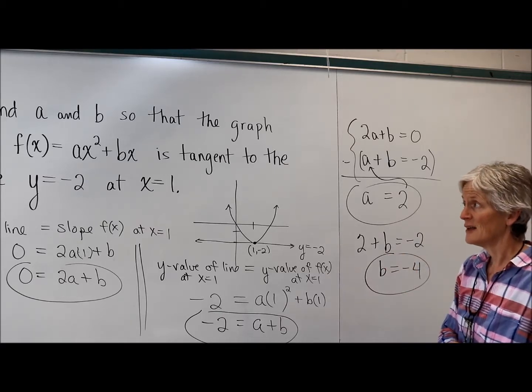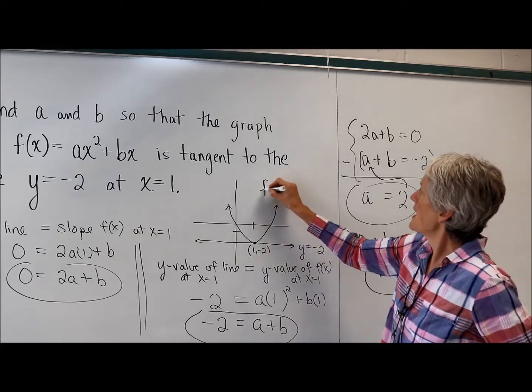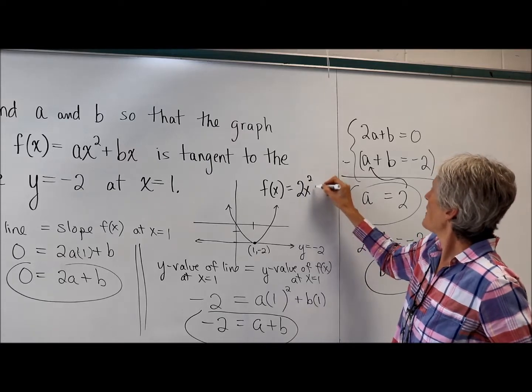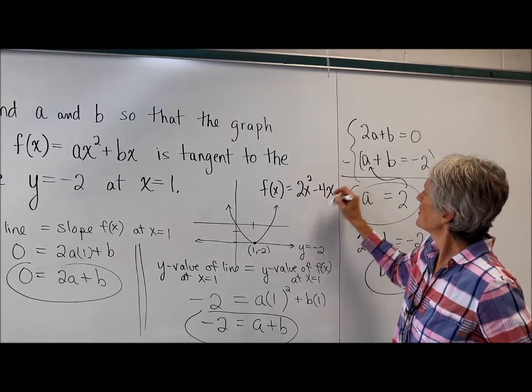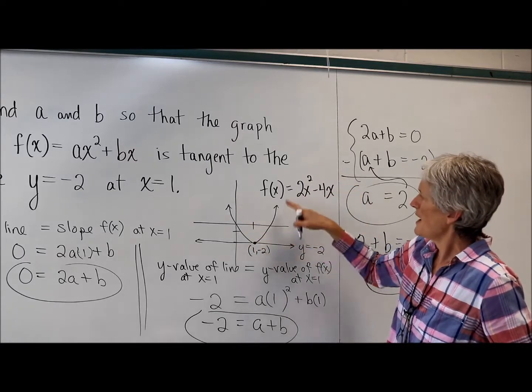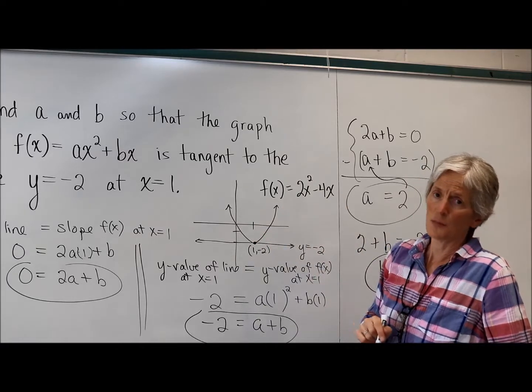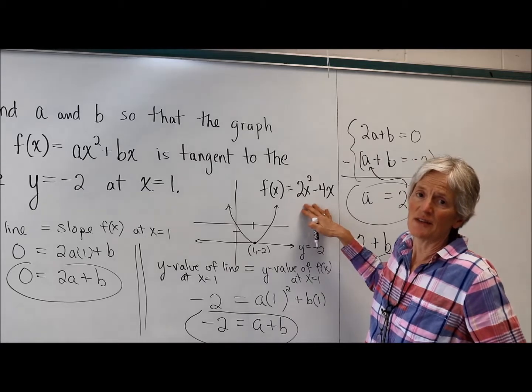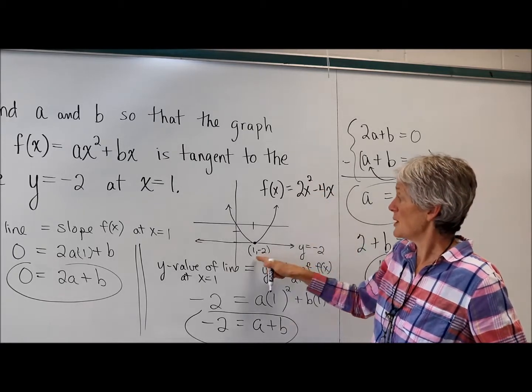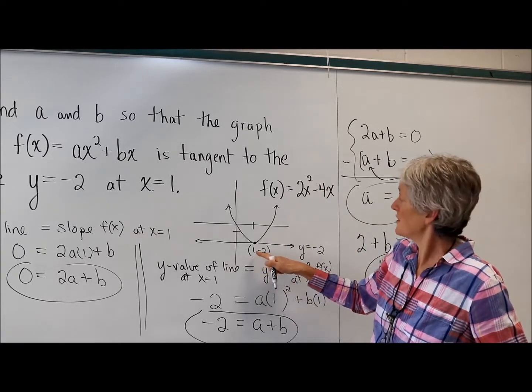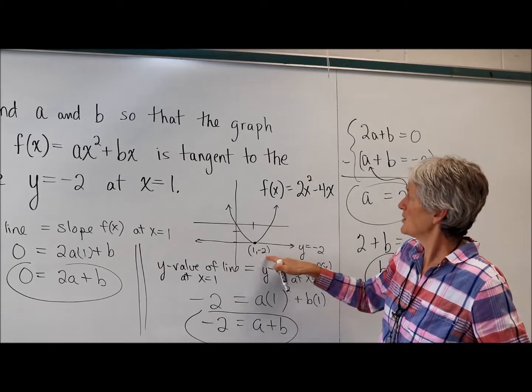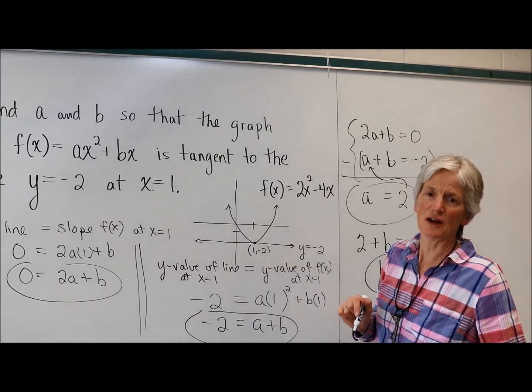Ah. So that means my original function, my parabola, is 2x squared minus 4x. So I did graph it somewhat appropriately. It does open up. Yeah. It looks good. And you could very easily check this. You could take the derivative and make sure it's 0. The slope or the derivative is 0 when x is 1. You could plug in 1 and make sure you get negative 2. I think that check would work.